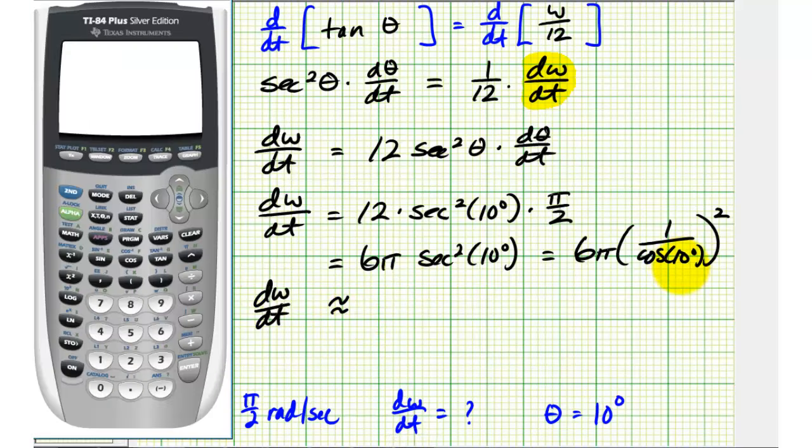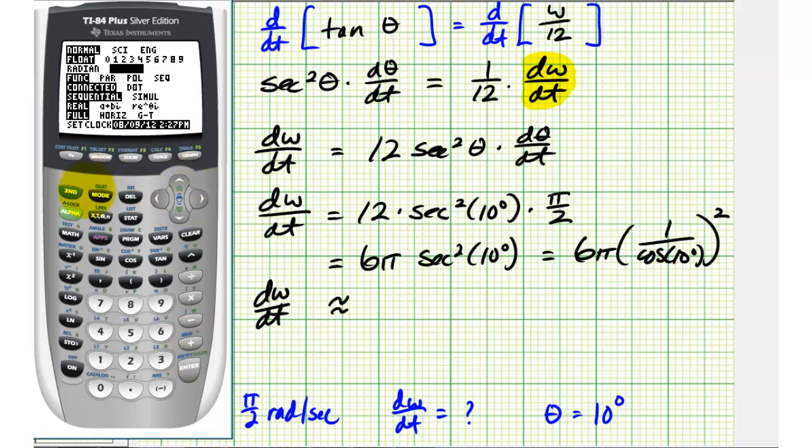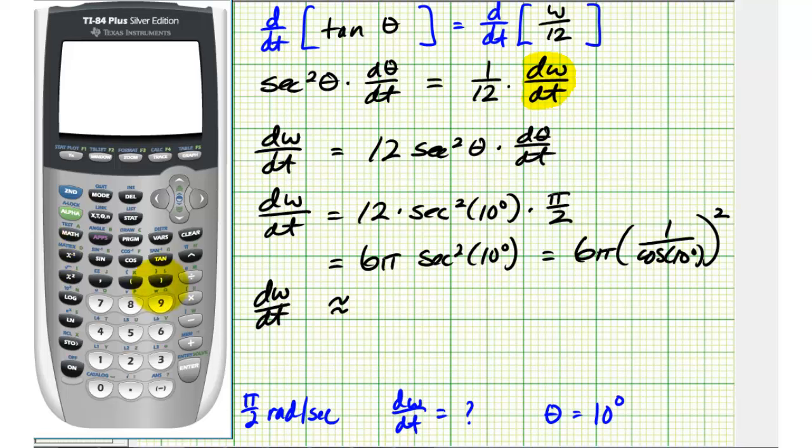We need to make sure that we are in degree mode. So we'll highlight degree and press enter, go back to the home screen, 6 pi times 1 divided by cosine 10 degrees squared. So dw dt is approximately 19.4356, and the units would be feet per second.